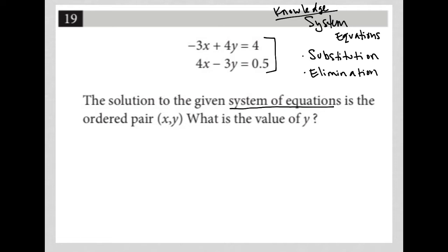So let's read the question and determine which strategy or method we want to use to solve the system of equations. The question says the solution to the given system of equations is the ordered pair (x, y), which just means we find a value for x and we find a value for y that make the system of equations true. This question is asking for the value of y. So I'm going to use elimination in order to eliminate the x value, which will allow me to solve for the y value.